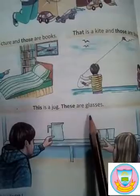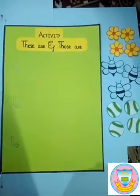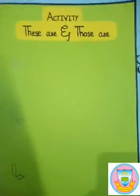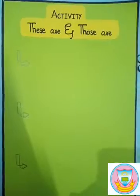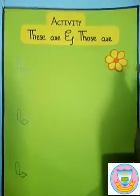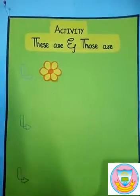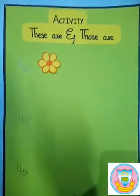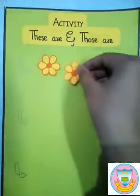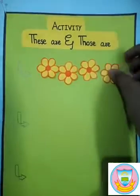Okay students, understand the concept of 'these' and 'those' clearly. Let's go to the activity board. Here we have a flower. There is one flower and it is near to the arrow, so we say 'this is a flower.' If there is more than one flower, then we say 'these are flowers.'